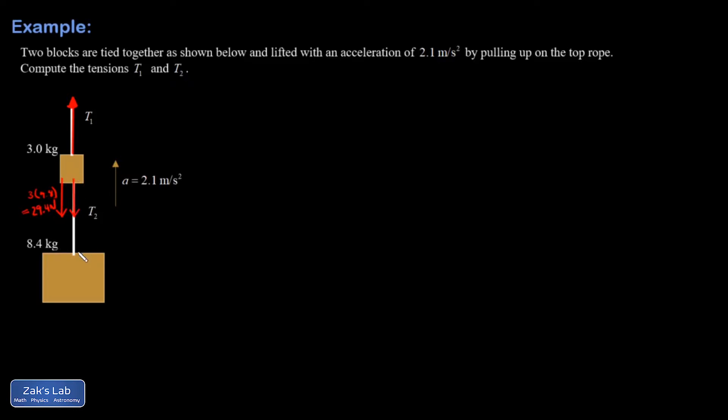T2 is also the same force pulling up on the 8.4 kilogram block. I'll just write T2 on each of those, and then I also have gravity pulling down on the 8 kilogram block. That would have a magnitude of 8.4 times 9.8, so it's always mg for force of gravity. That's 82.32 newtons, I'll keep the extra decimal point.